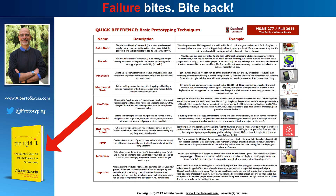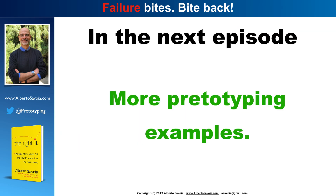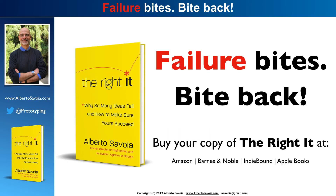Now, the pretotyping technique that Hawkins used — by the way, again, he did not use that name; these are my names — I call that technique the Pinocchio. Pinocchio was the wooden puppet that wanted to be a boy. Here what we have is a wooden tablet, a piece of wood with a little stylus that wanted to be a live working PDA. The Pinocchio is just one of the several techniques that I teach in my class and include in my course. All of them are covered with many, many more examples similar to the one I've just shared with you in my book, The Right It. And in the next episode, I'm going to give you even more pretotyping examples so you get more of a flavor for what pretotyping is all about, because it's one of the most important tools in our arsenal to fight the law of market failure.